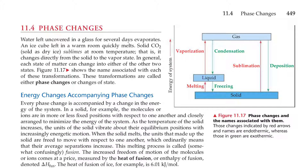The increased freedom of motion of the molecules or ions comes at a price measured by the heat of fusion, or enthalpy of fusion, denoted as delta H sub fus. The heat of fusion of ice, for example, is 6.01 kilojoules per mole.